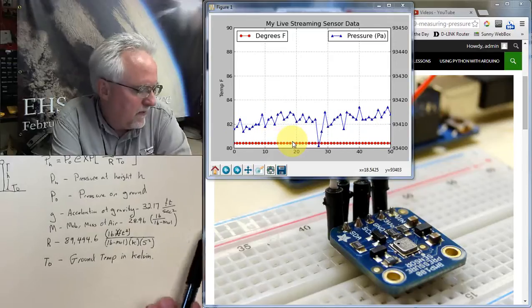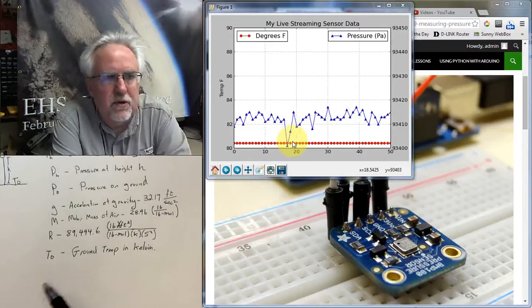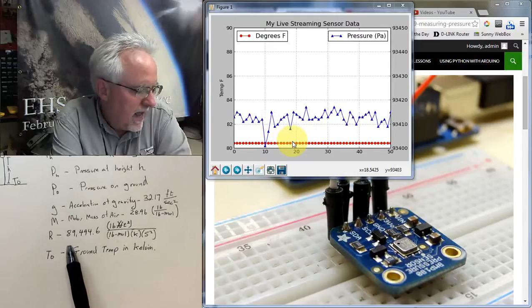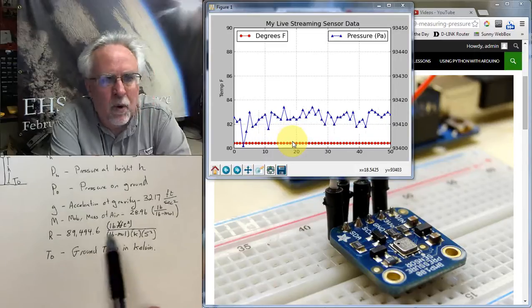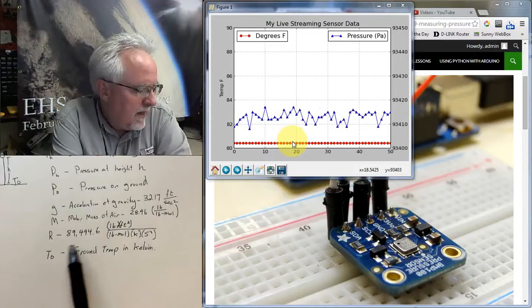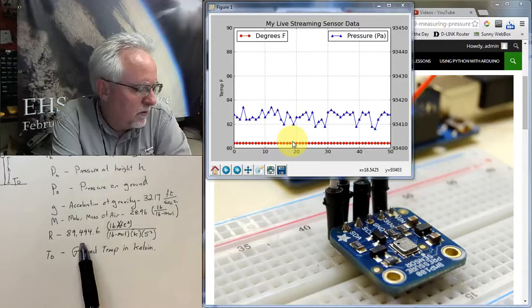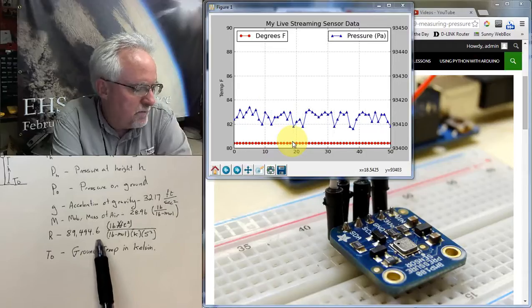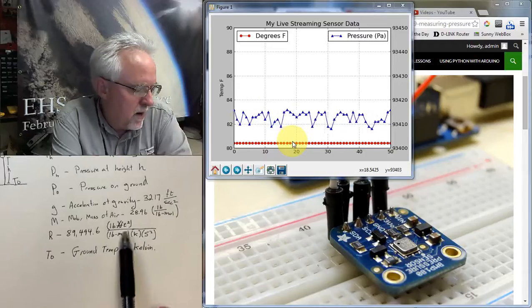Then we have R, and R is sort of like a universal gas constant, and in the units we're working in, to work in feet and pounds, it is 89,494.6 pound feet squared per pound mole,